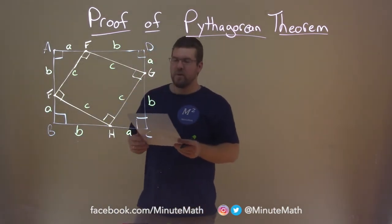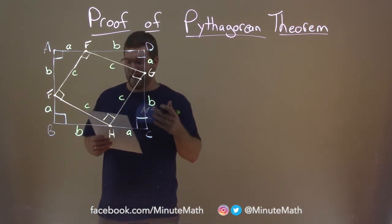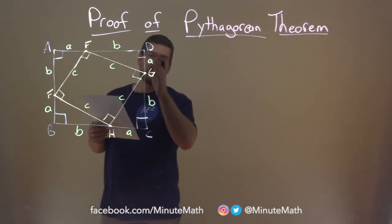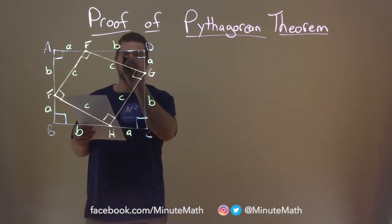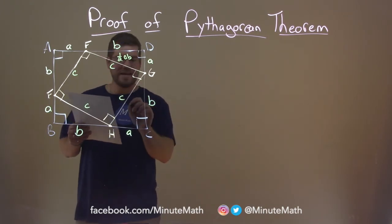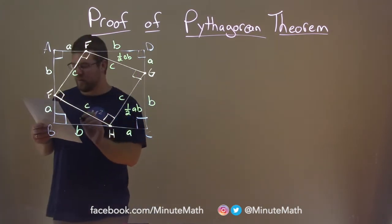One thing we know is that the area of each one of these little triangles right here is one half base times height, while the base, let's say, is A and the height is B or vice versa. It's just one half AB for each one of these. And this is going to be important to note.